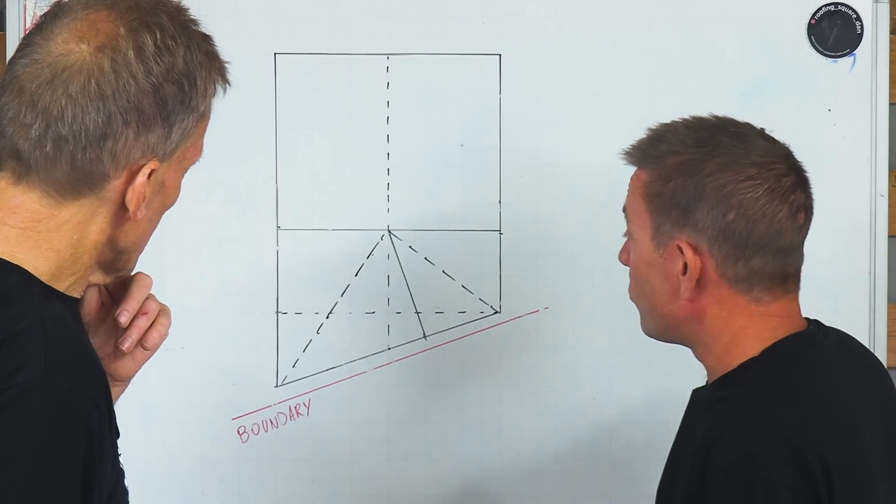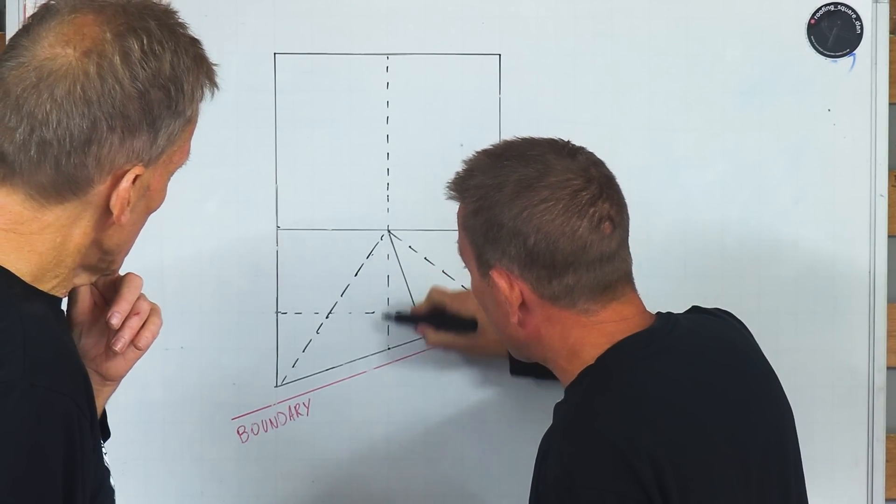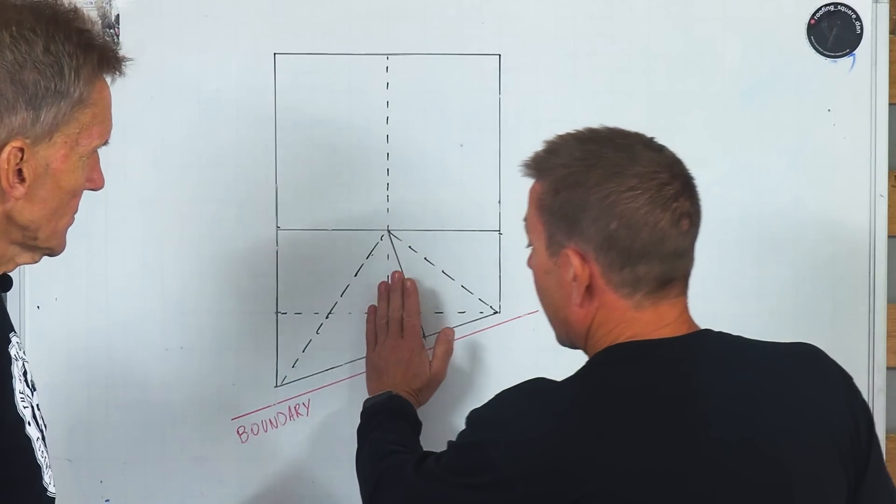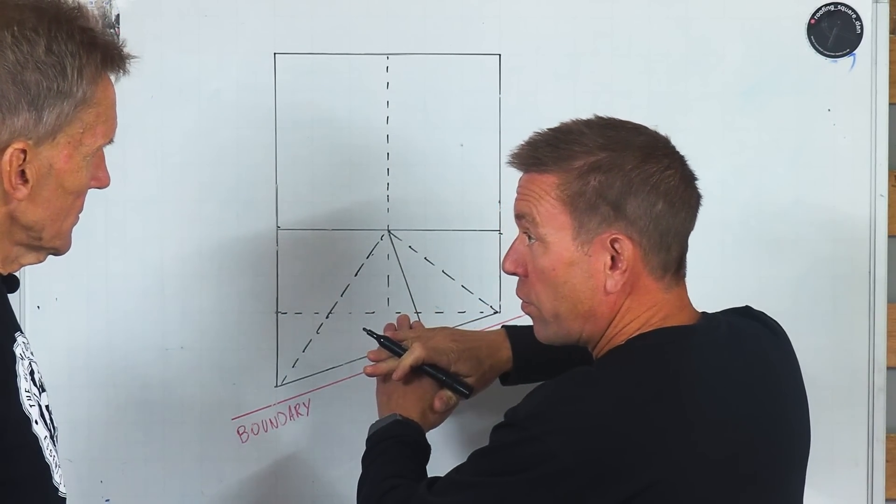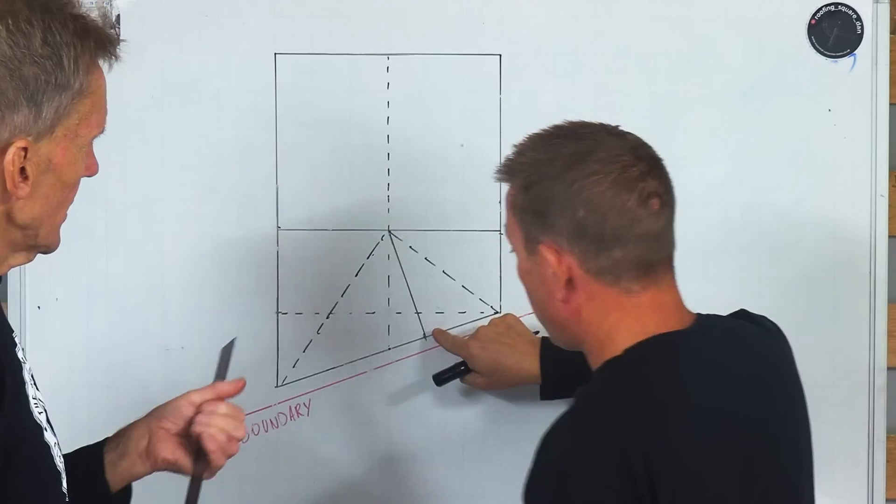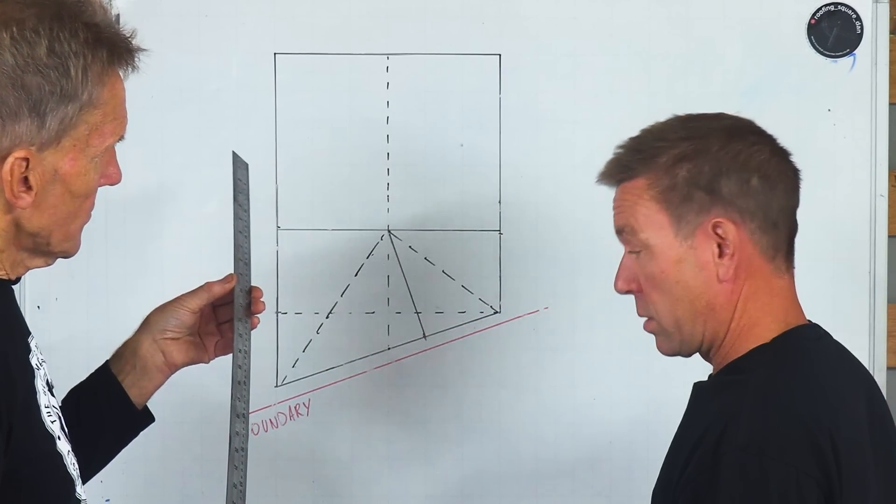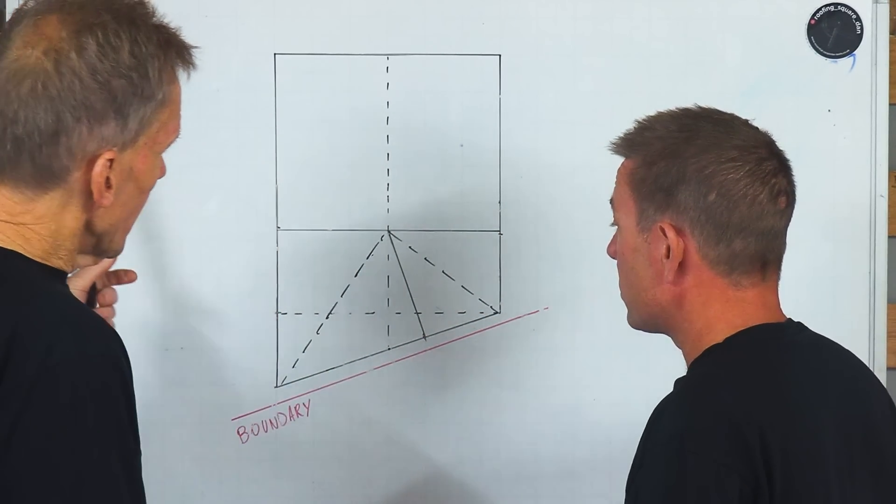Now originally the architect drew it that all the rafters went parallel with the ridge. If we'd done that, they would have sat at an angle, the battens would never gone on flat. So that's important that you keep it square off of the oblique end. Because they would have gone twisted.